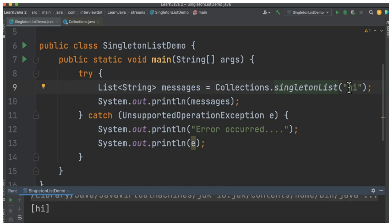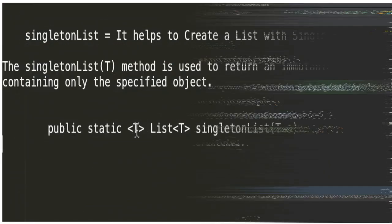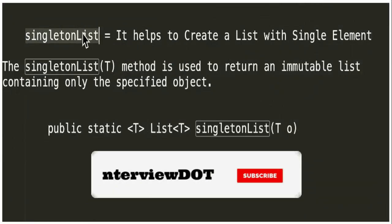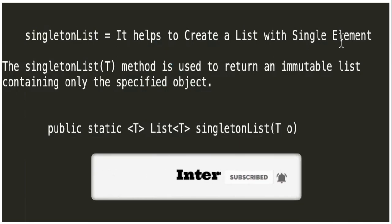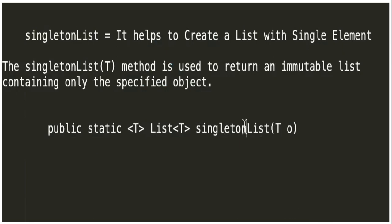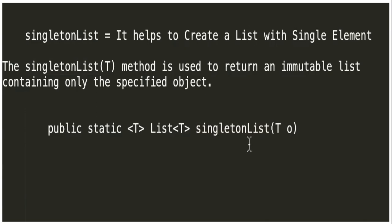Here I'm trying to add an element and then print it out. When you run this program you can see it prints a single element in the console. Singleton list helps to create a list with a single element — this is the method signature: it takes one element and returns a list.